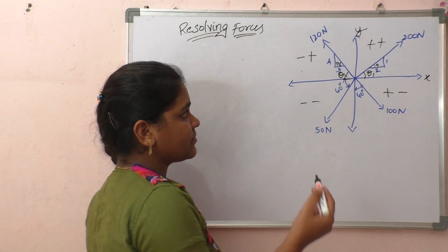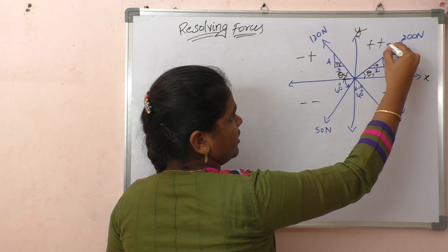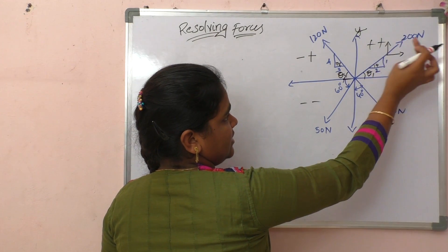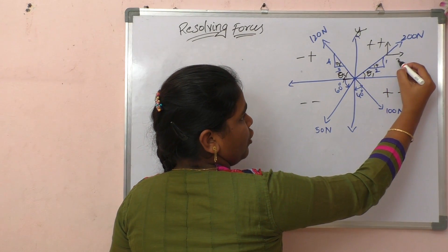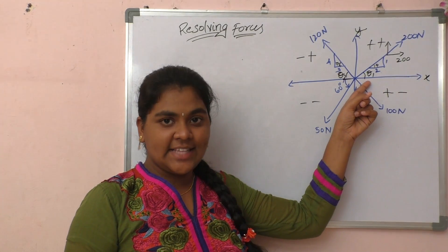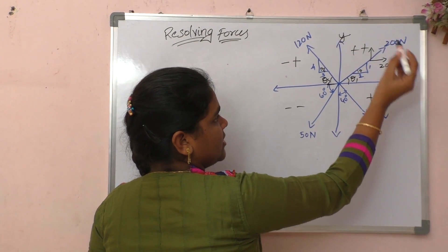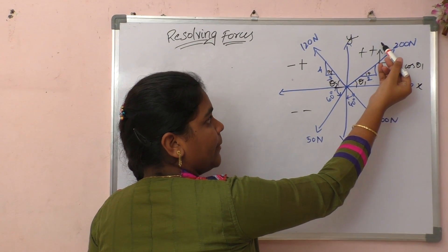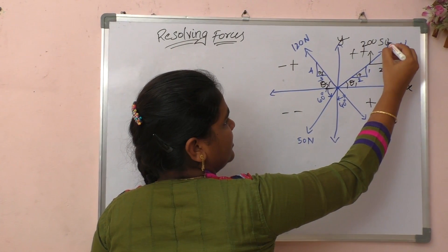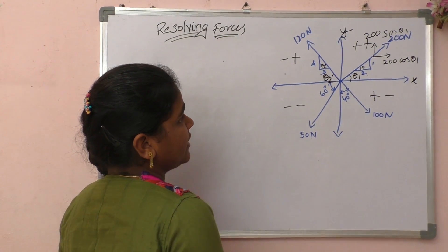Now let's resolve each force. For the 200 newton force: since it makes an angle with the x-axis, the x-component is 200 cos(theta1) and the y-component is 200 sin(theta1).